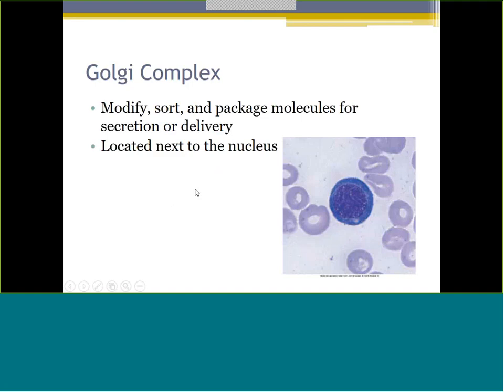The Golgi complex is the area where you modify, sort, and package molecules. It is typically located right next to the nucleus. On certain cells when you stain them, the Golgi doesn't stain well, so it'll be a white area next to the nucleus that never picked up stain. You can see it in this picture - the cytoplasm is really dark blue, except that little white area right next to the nucleus - that's the Golgi. It just doesn't take the stain very well.